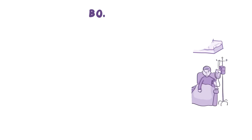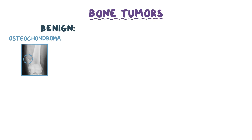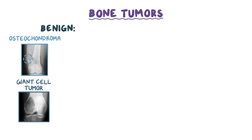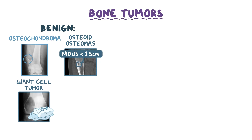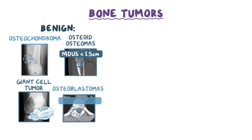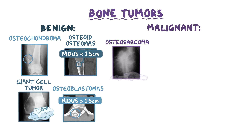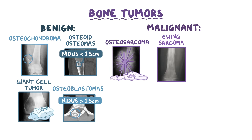As a quick recap: benign tumors include osteochondroma, which presents with exostosis; giant cell tumor, which has giant cells and looks like soap bubbles on x-ray; osteoid osteoma, characterized by a nidus less than 1.5 cm; and osteoblastoma, whose nidus is greater than 1.5 cm. The primary malignant tumors include osteosarcoma, made of large pleomorphic cells with a sunburst appearance on x-ray; Ewing sarcoma, with round blue cells and a sliced onion appearance on x-ray.